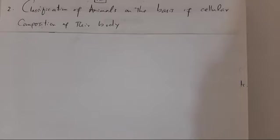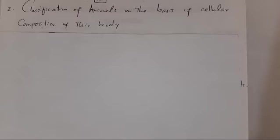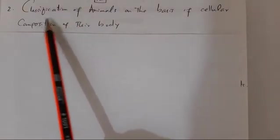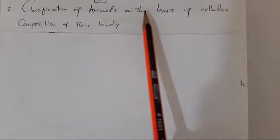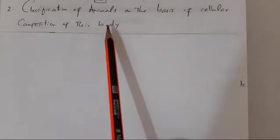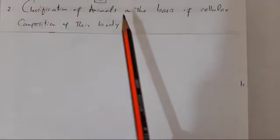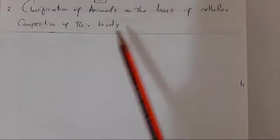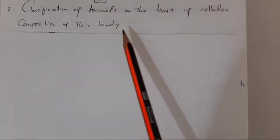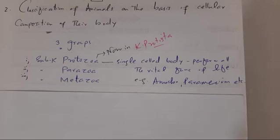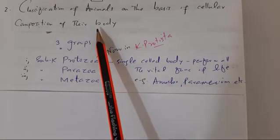As we studied, animals can be classified on several bases. The first classification was on the basis of the vertebral column or backbone. Now in this lecture, we will study the second classification — the classification of animals on the basis of cellular composition of their body, whether their bodies are made up of many cells or one cell.